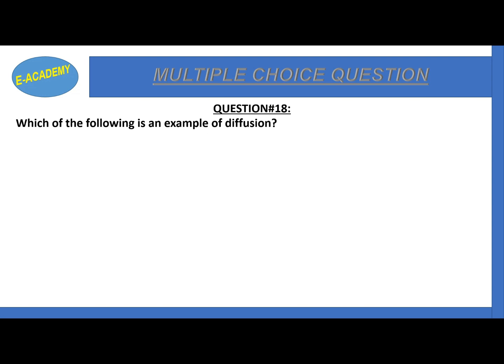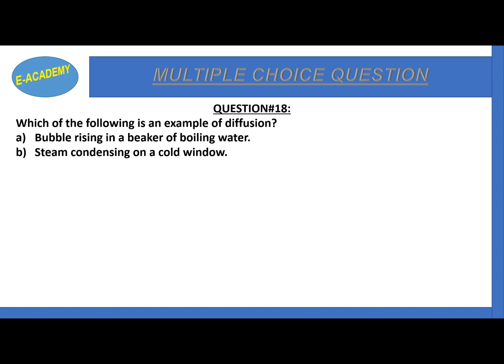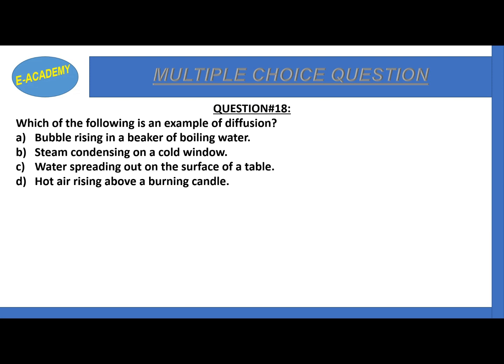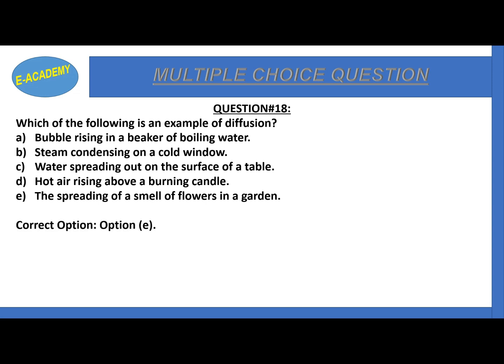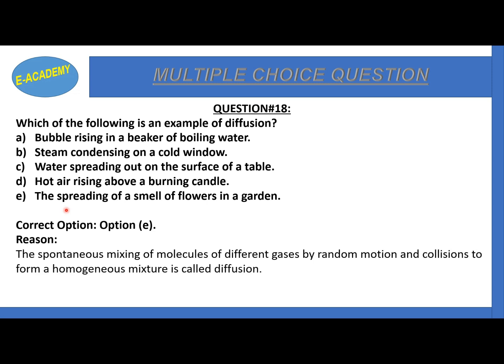Question number 18: Which of the following is an example of diffusion? Bubble rising in boiling water, steam condensing on a cold window, water spreading on a table, hot air rising above a candle, or the spreading of the smell of a flower in a garden? The correct option is E: spreading of the smell of a flower in a garden, as this is an example of spontaneous mixing of gas molecules by random motion.